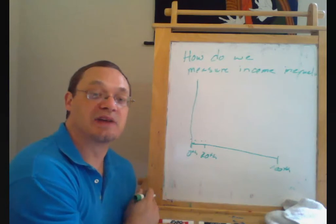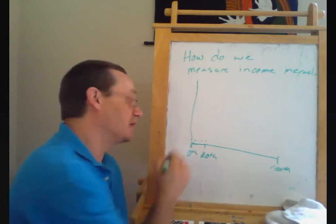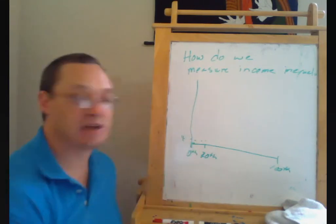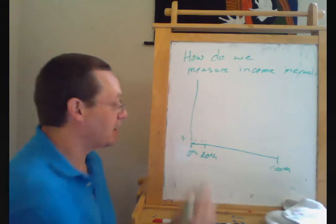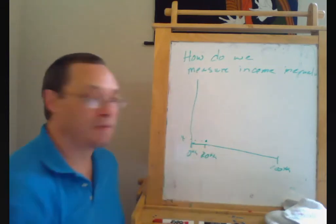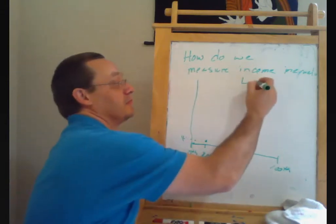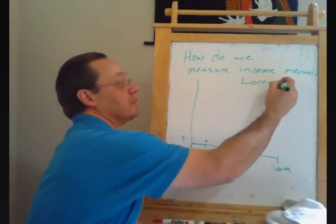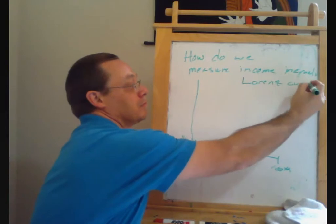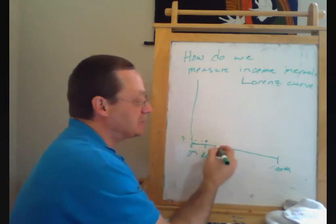So let's say that by the time we add up to the 10th percentile, everyone in the 10th percentile or less, if we add up all of their income, we get to 4% of overall national income. So we're going to build here what we call the Lorenz curve.